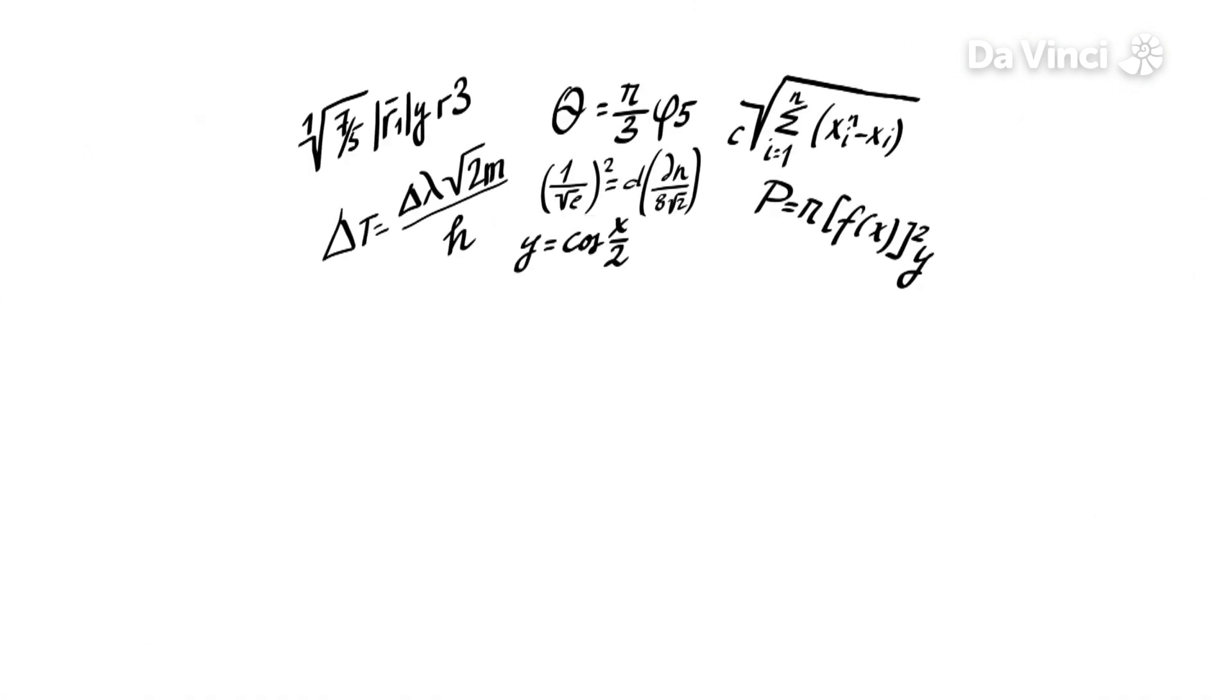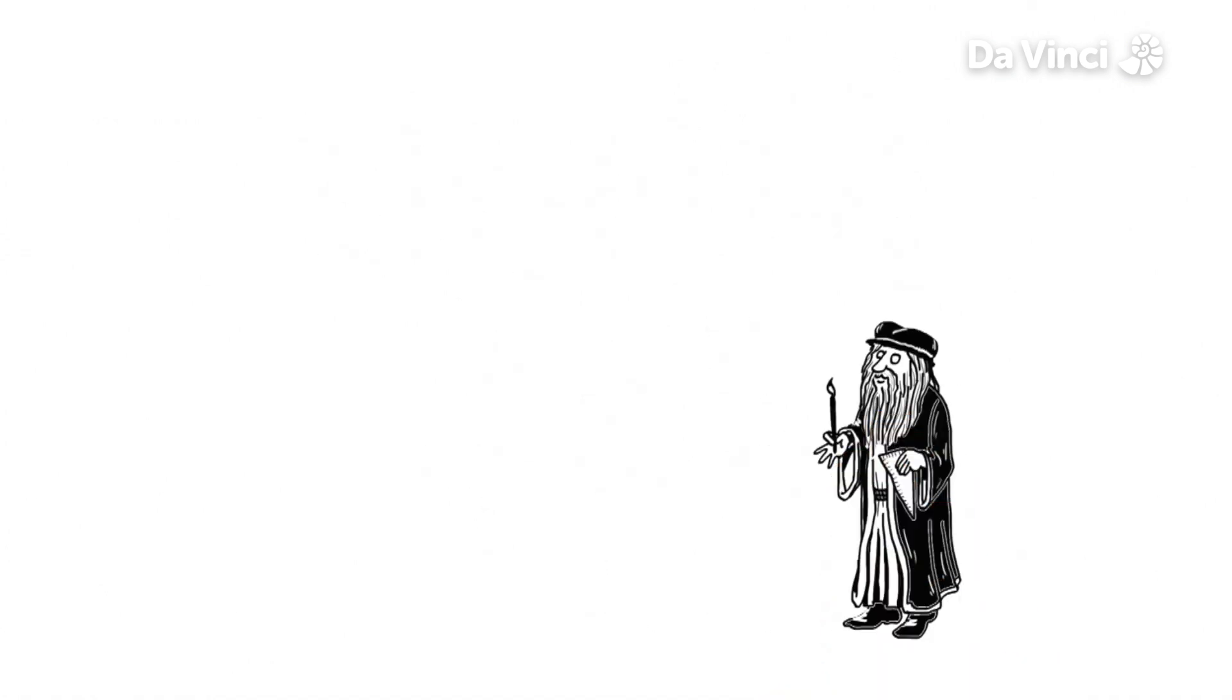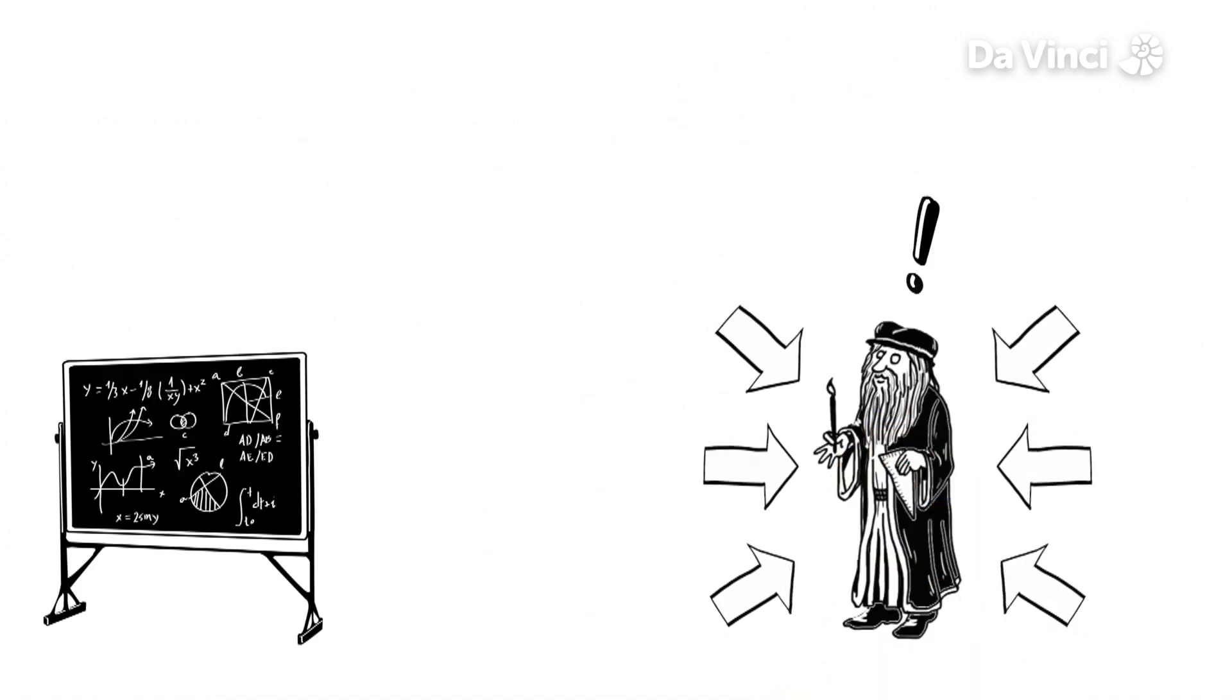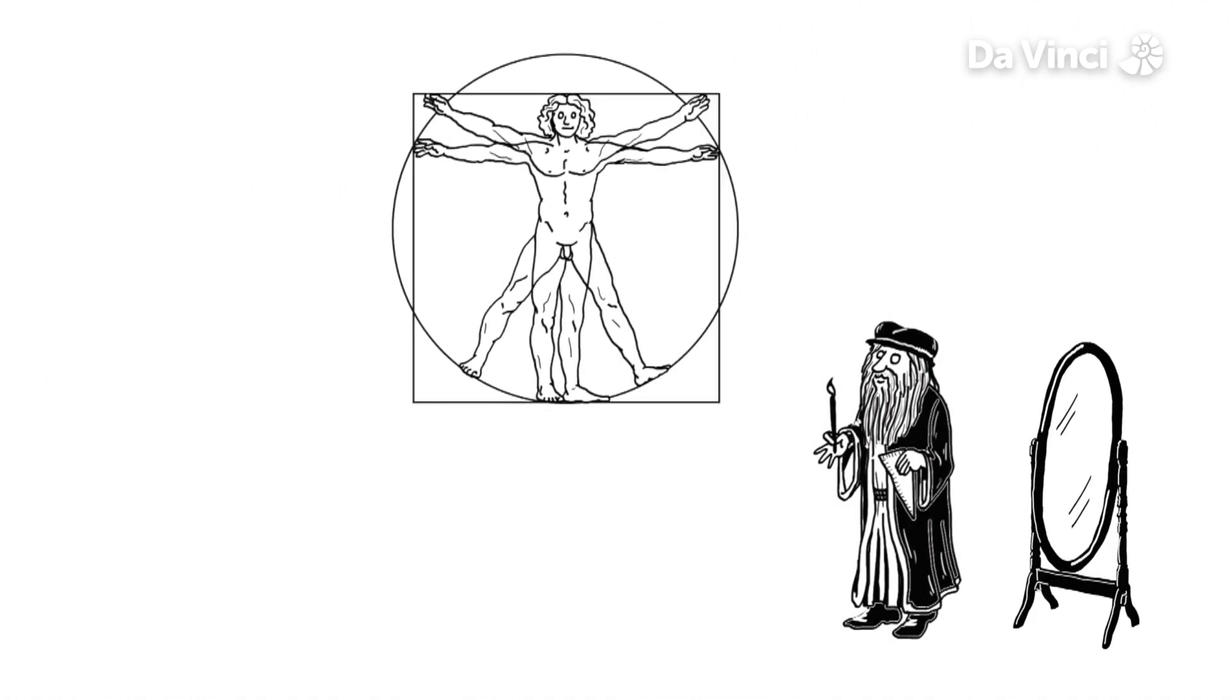Not only is maths all around us, it's also in us. Leonardo da Vinci was so fascinated by the maths that govern our bodies that he drew the Vitruvian man to show it. He noted that one half of our body looks the same as the other half, it's a mirror image.